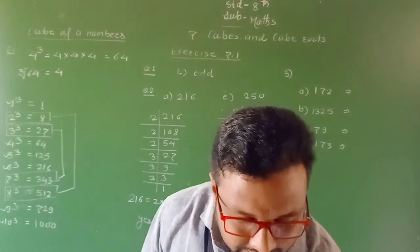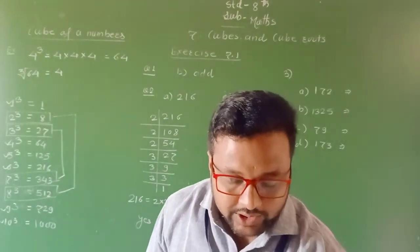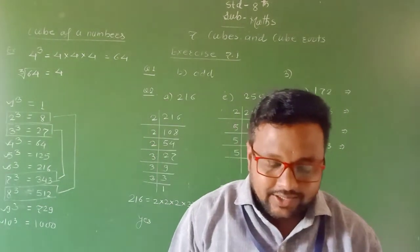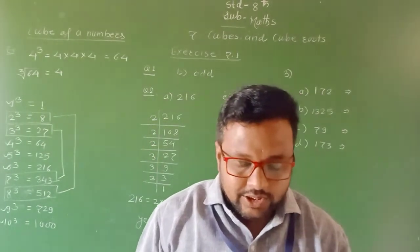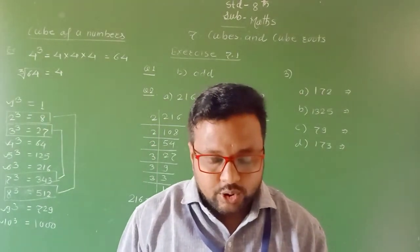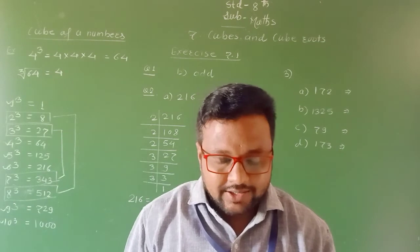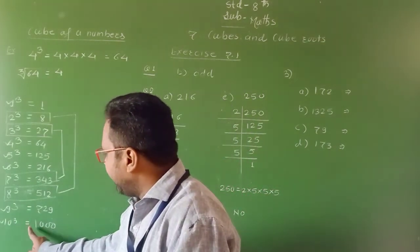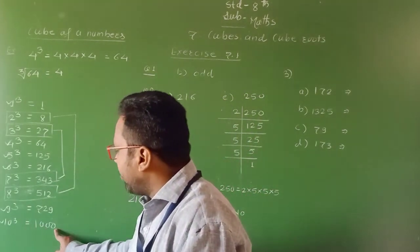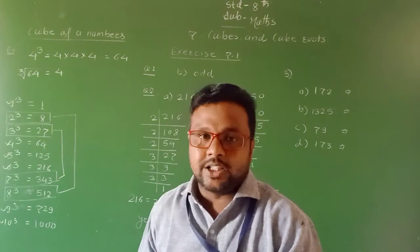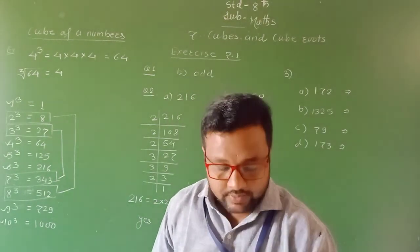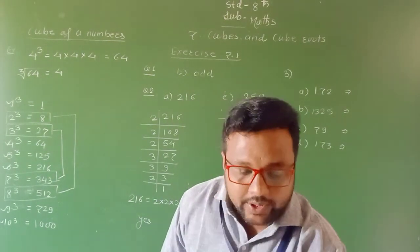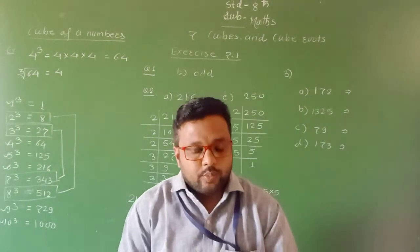Next, 10 cube is 1000, which shows that if a number ends in 0, its cube will end in three zeros. See 10 cube — 1 is followed by three 0s. These are the properties of cubes of numbers.